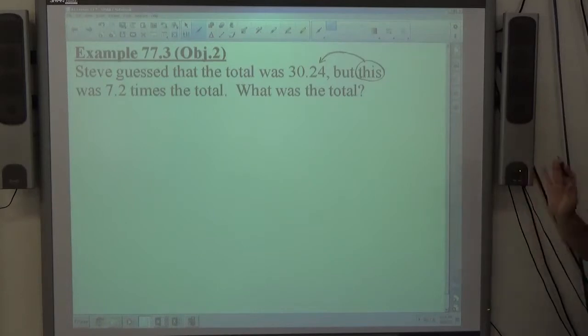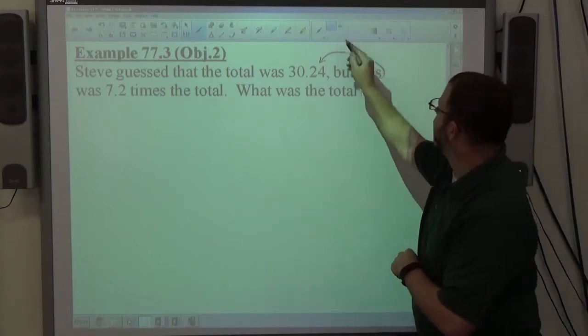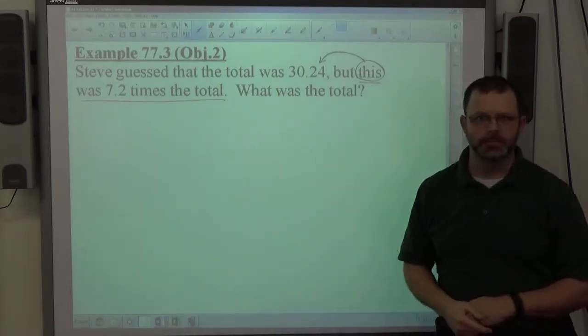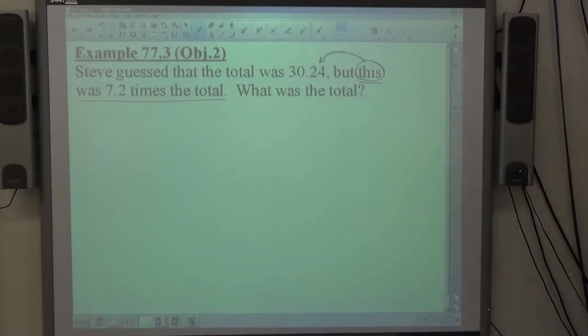Alright, so if I take this phrase here, this was 7.2 times the total. Just taking those words, keeping in mind that the word this is actually meaning 30.24.